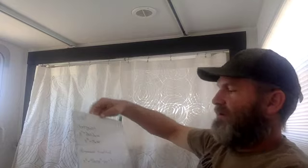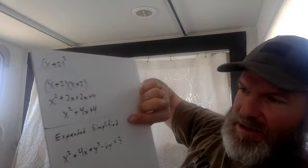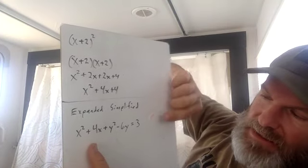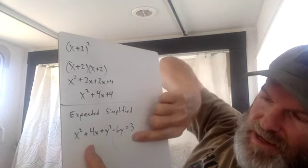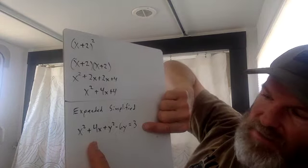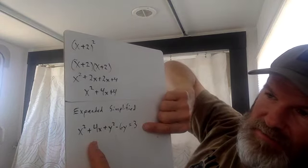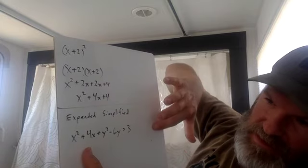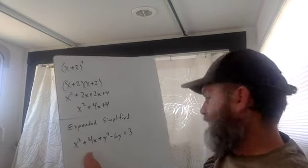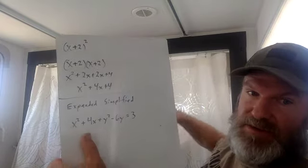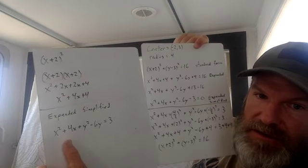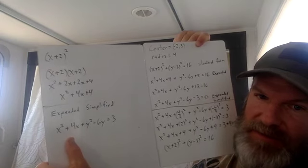There's another way that's slightly different: expanded form simplified. Instead of subtracting the 16 over to the left and making it a negative three, you could subtract the 13 to the right and make it a positive three. So you can see both these at the same time — two different ways to do the expanded form simplified.